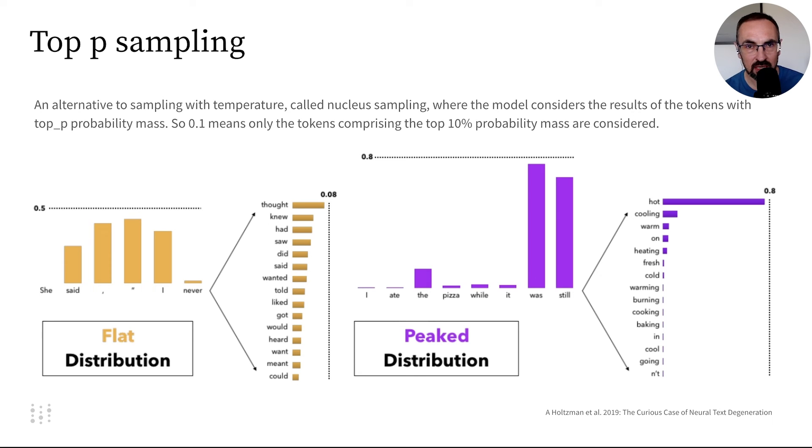Depending on the input, distribution may be flat or peaked, affecting token choice. Top-p sampling is popular and results in high-quality generated text. And again, that's something we'll experiment with in the next video.